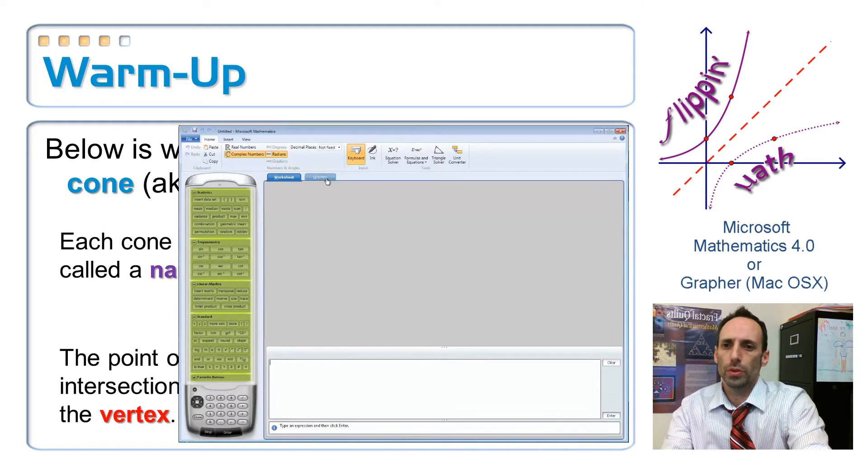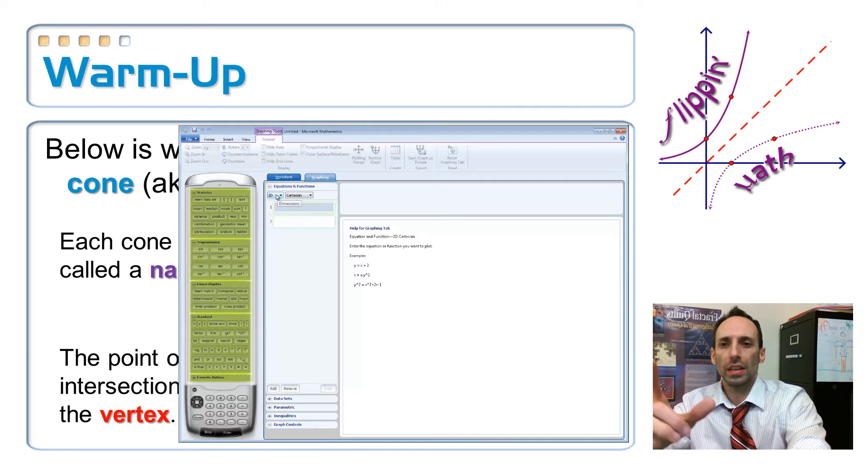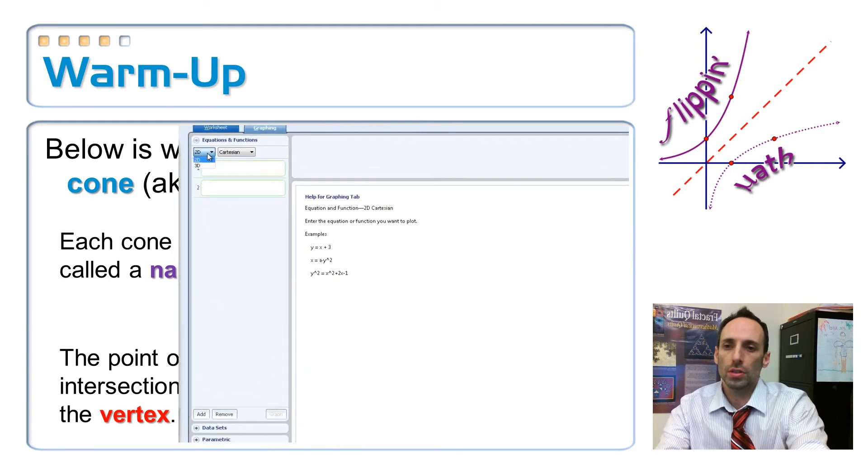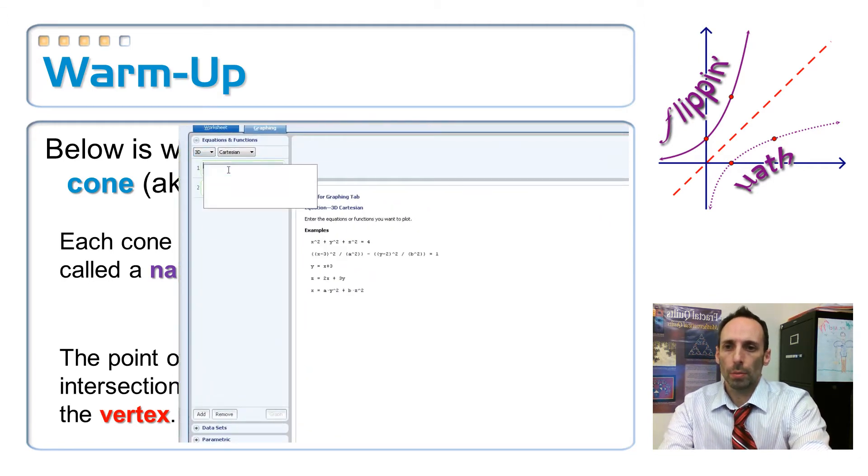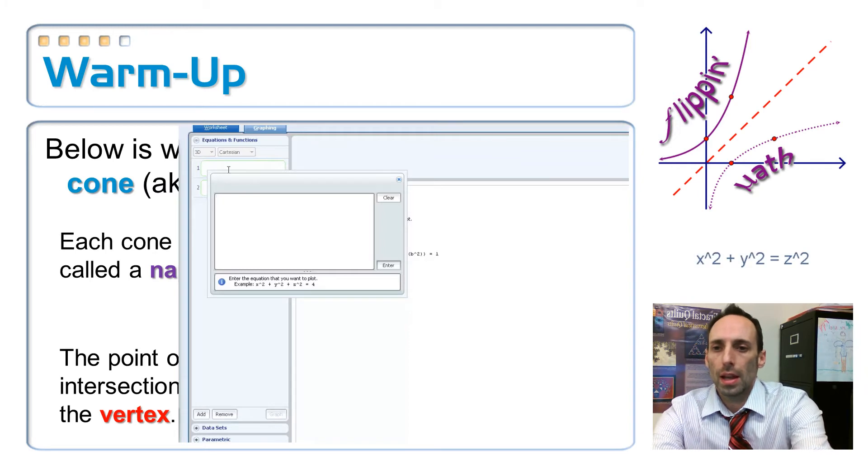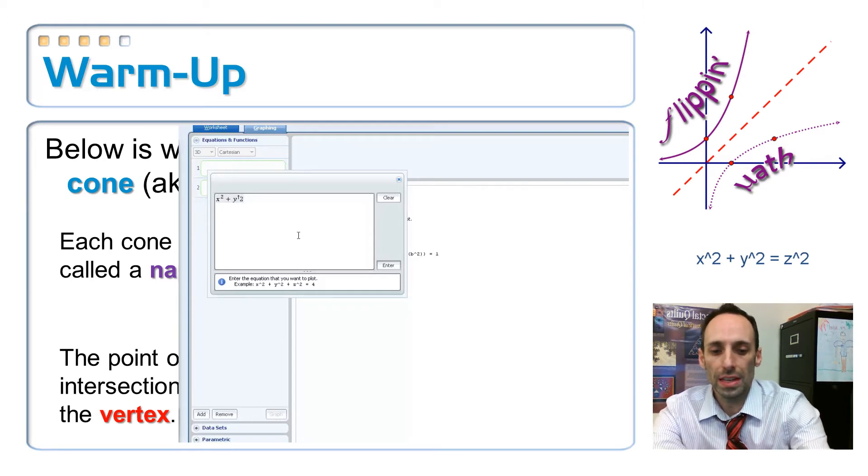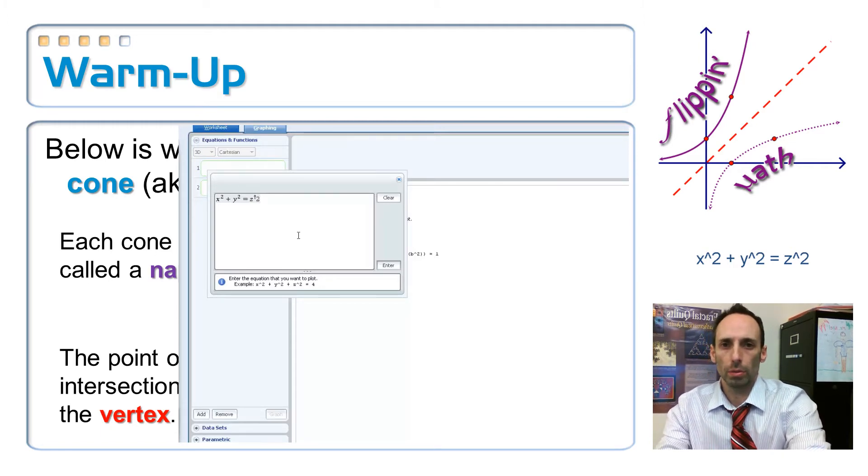Anyway, so what you want to do whenever this thing pulls open is you want to go over to the graphing tab, okay, and right here underneath equations and functions, if you can see this, it says 2D in Cartesian. We're going to change that 2D to a 3D. What I'm going to do is I'm going to type an equation. I just clicked on the number one little box, and I'm going to type in this equation. I'm going to type in x squared, so I just use the little caret for the 2, plus y squared, y squared is equal to z squared, and it kind of looks like the Pythagorean theorem with x's, y's, and z's. I'm going to hit enter on this.